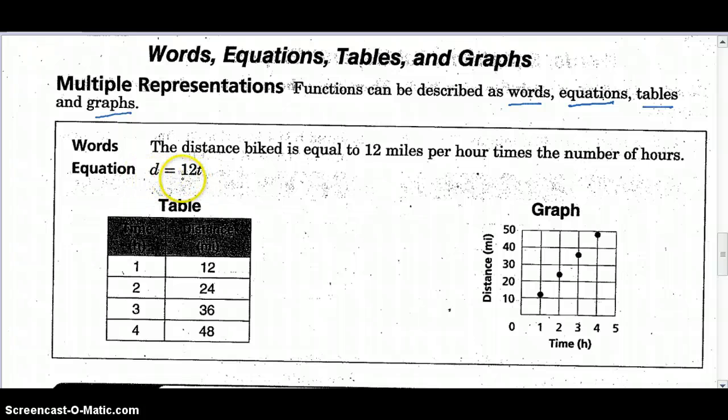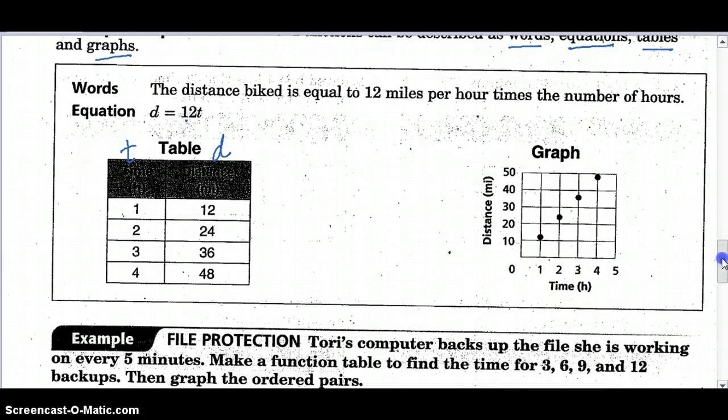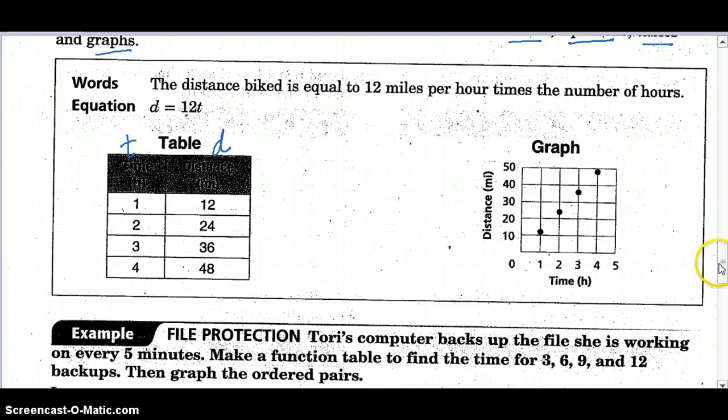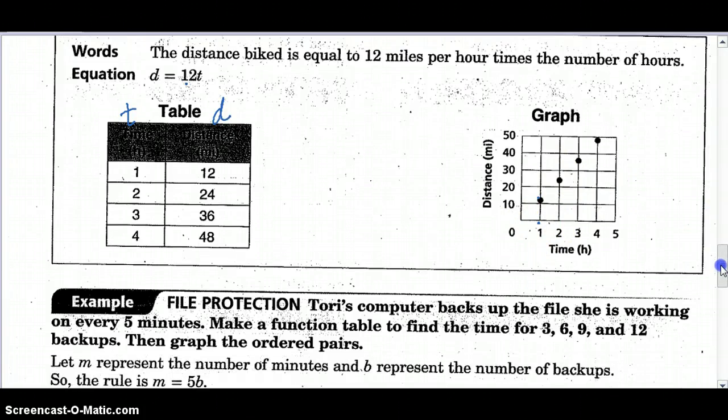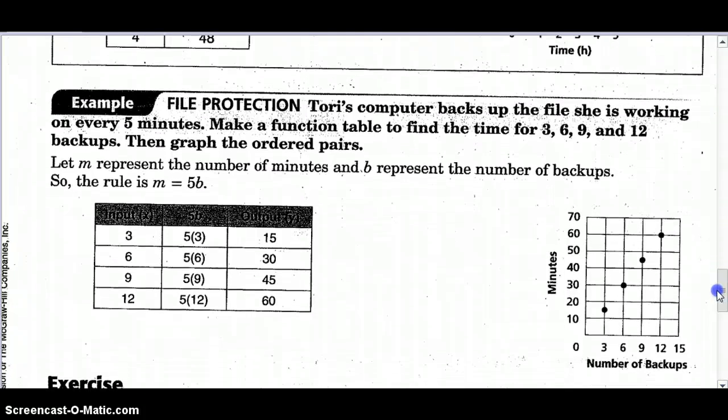Distance equals the distance we've traveled. Or, excuse me, the distance is our rate, 12 miles per hour times time. Our input would be here. This is our time. And our output would be our distance. And here it is in a graph. So all of these represent a function. Every x has one y. For each x, there was a y. Only one y.